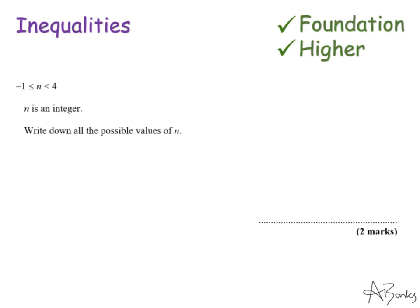Hi everyone and thanks for watching my online lesson on inequalities. There are three sections to this video. The first one says: n is an integer, write down all the possible values of n. The first thing to note is that an integer just means a whole number, so we're looking for what whole numbers n could be. In this example, n is between minus one and four.